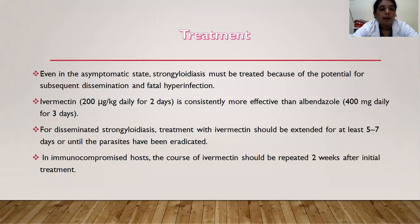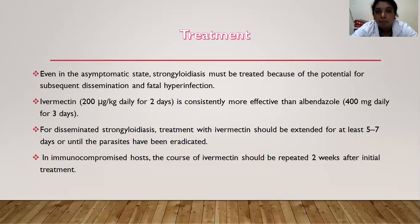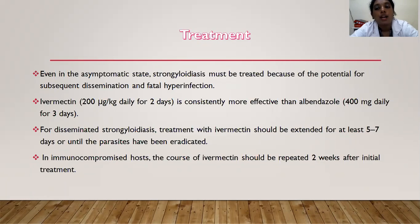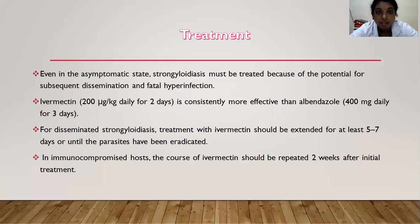Even in the asymptomatic state, strongyloidiasis must be treated because of the potentiality for subsequent dissemination and hyperinfection. Treatment: ivermectin 200 micrograms per kg daily for 2 days is consistently more effective than albendazole. Albendazole dose is 400 mg daily for 3 days. For disseminated strongyloidiasis, treatment with ivermectin should be extended for at least 5 to 7 days or until the parasites have been eradicated. In immunocompromised hosts, the course of ivermectin should be repeated every 2 weeks after initial treatment.